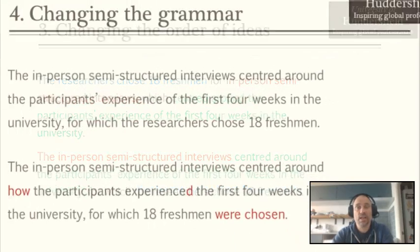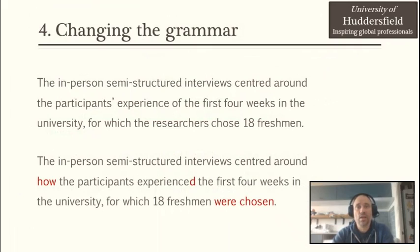The final strategy is changing the grammar. If you take a look at this example, you'll see that I made two changes to the grammar. In the second part, I changed experience to experienced — so in the original text experience was a noun, but here it is a verb — and also the active sentence was turned into a passive one. Now maybe in this particular example these changes are not spectacular, so let me give you a few examples of how you can change the grammar.